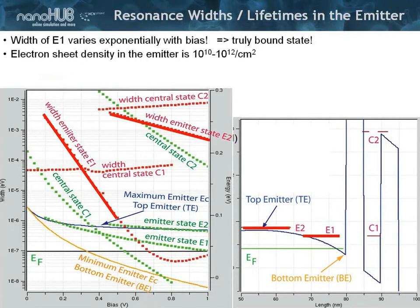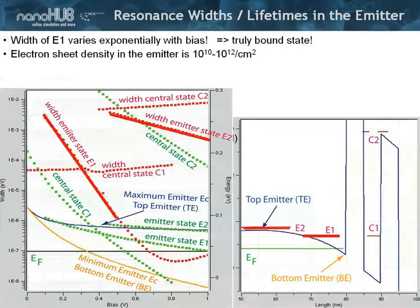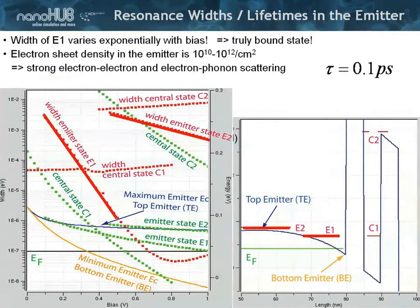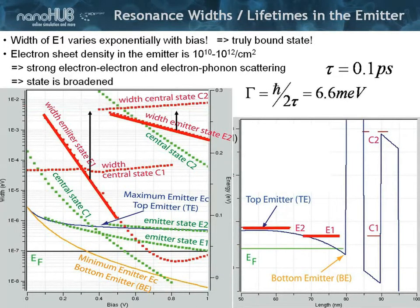That bound state actually interacts with all the electrons that are set up here. It is broadened. If it's broadened by, say, a typical scattering rate of polar optical phonons of 0.1 picoseconds, that would correspond to a width of roughly 6 millielectron volts. If you just take a general scattering rate of 0.1 picosecond and convert h-bar over 2τ, you get 6 millielectron volts.